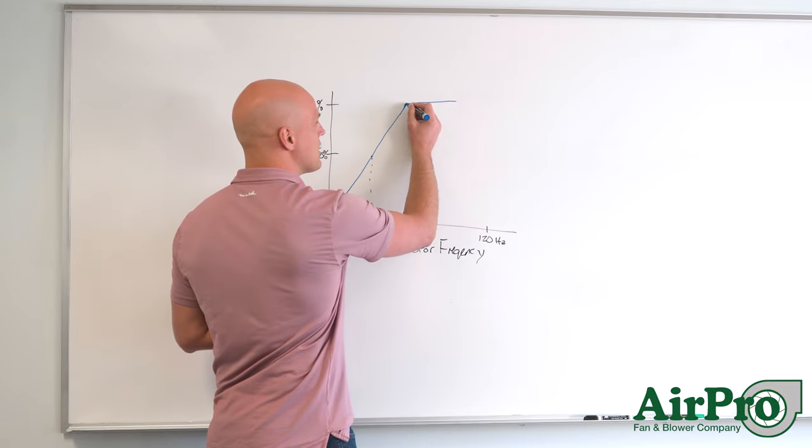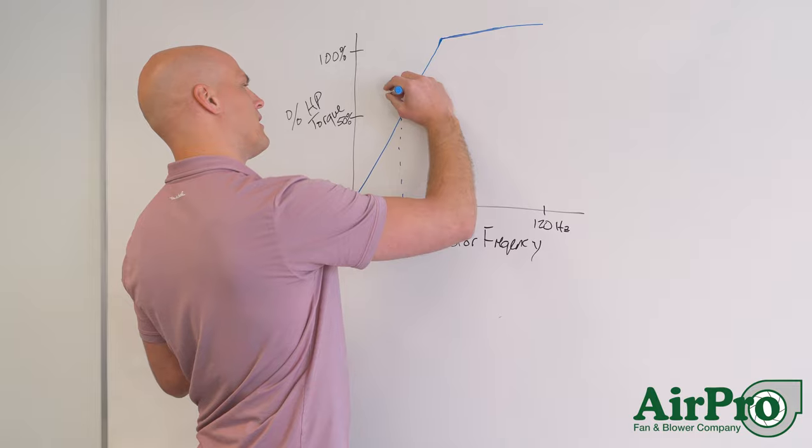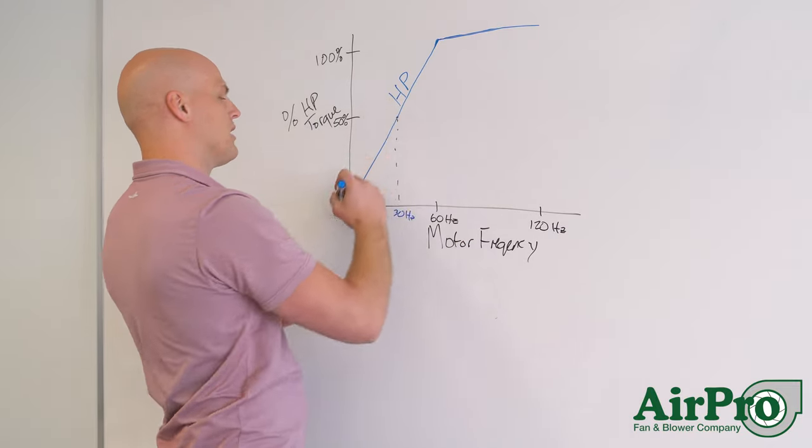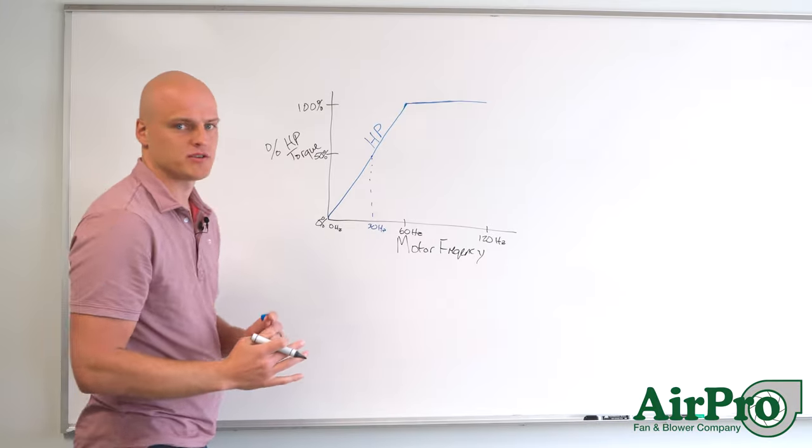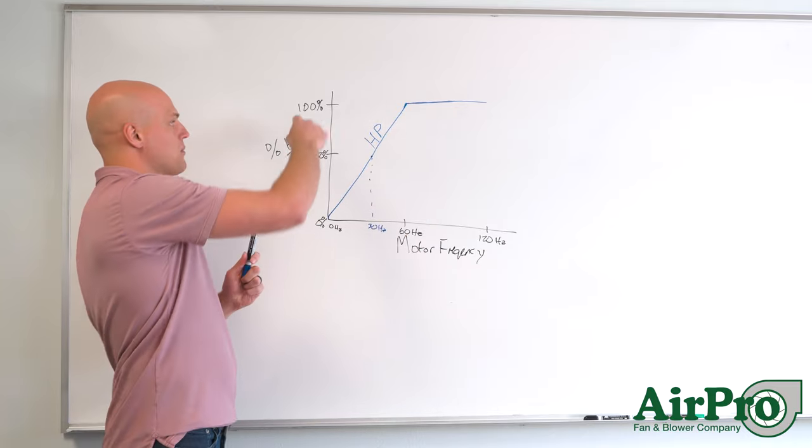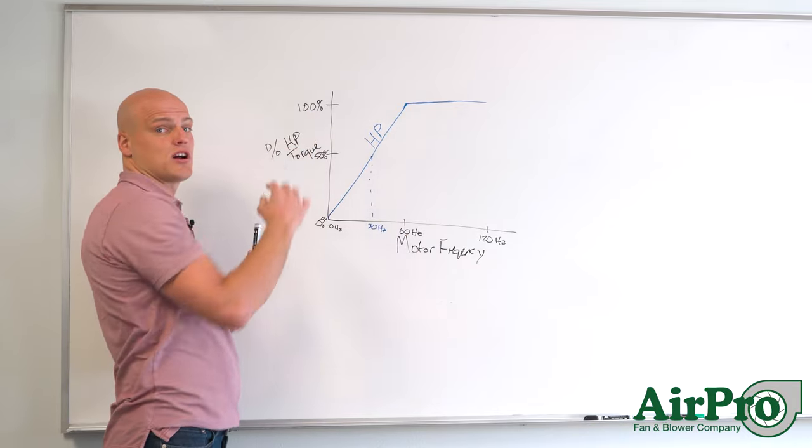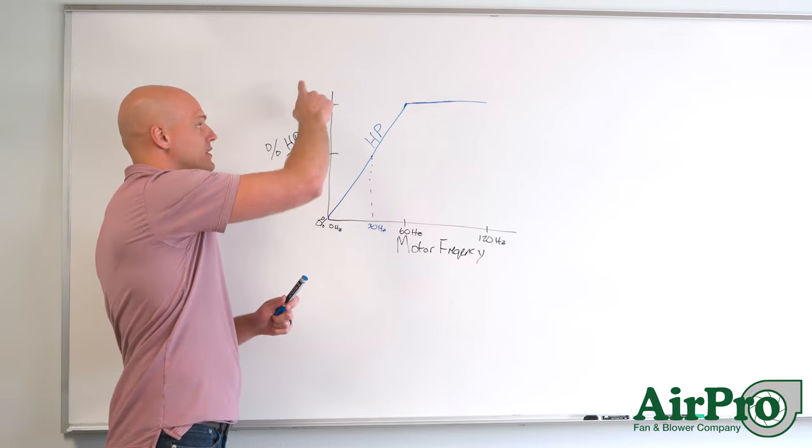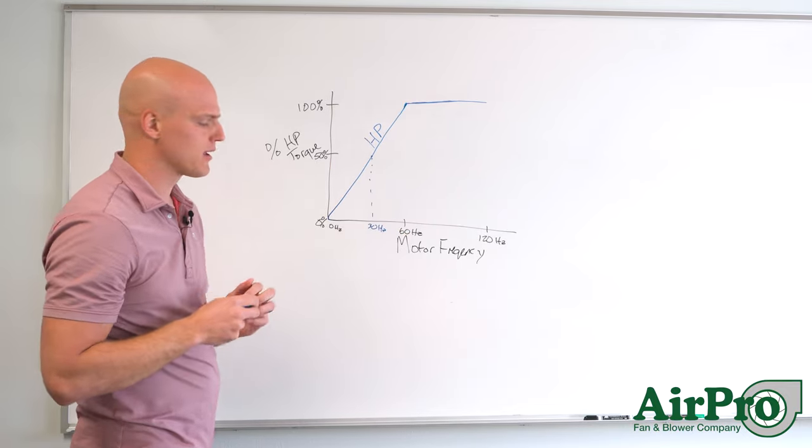So this is the horsepower. I'm going to write that right here. This is the graph showing the relationship between horsepower and frequency and how much percentage of your motor nameplate horsepower is available based on the frequency you are operating.